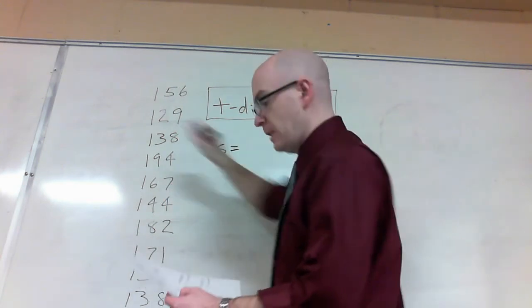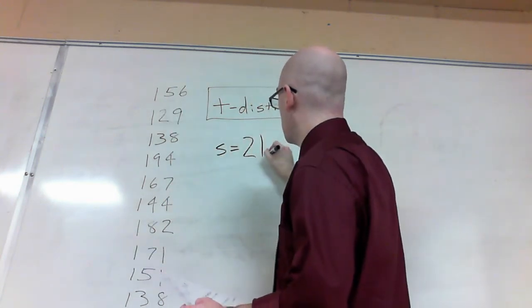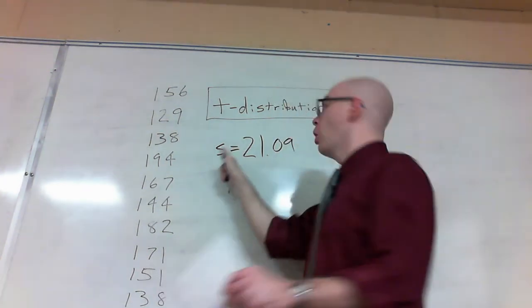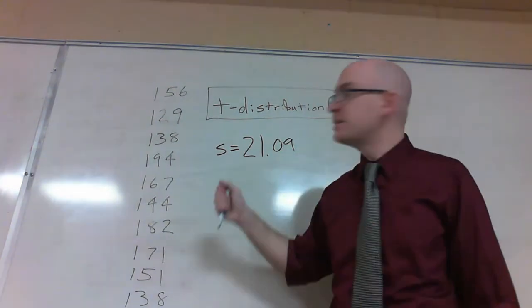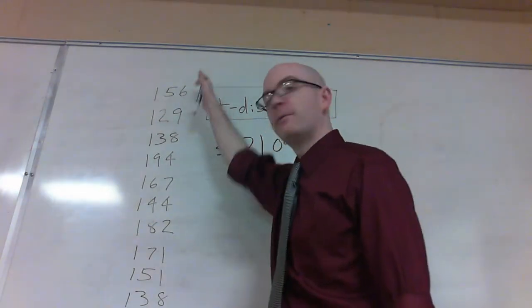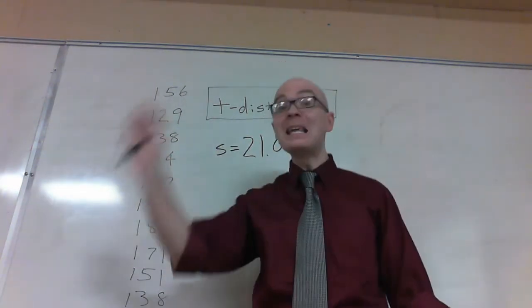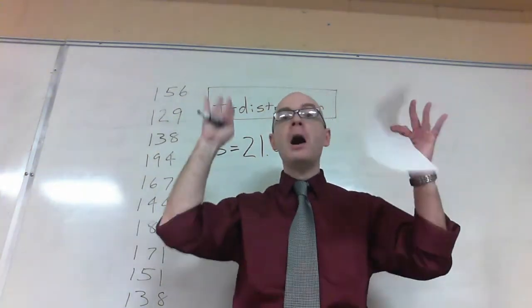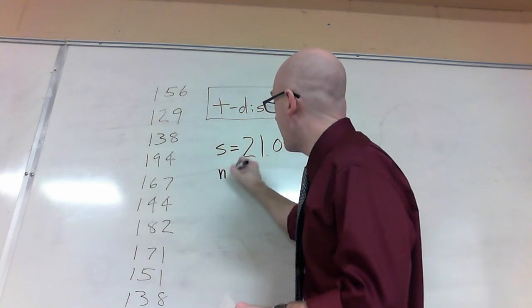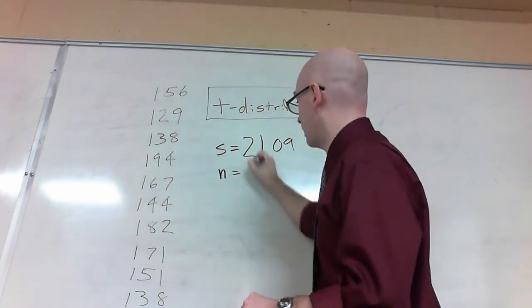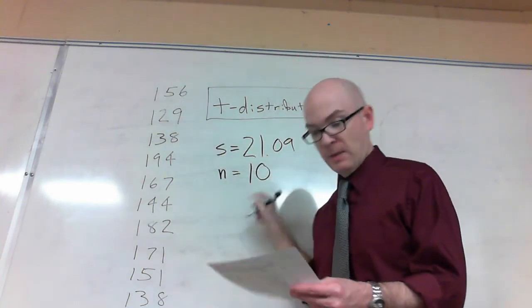My standard deviation for all these guys is 21.09. Notice I'm not using sigma here. Why not? Well, this is just my standard deviation of this sample. I don't know anything about the standard deviation of my whole population just yet. I do know that I happen to have 10 things right here. So n equals 10. My sample size is 10.